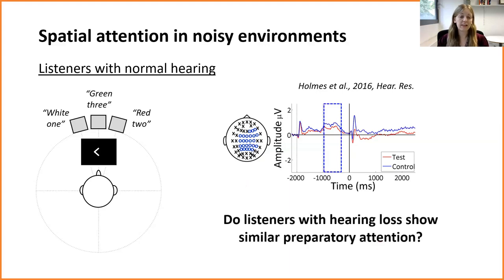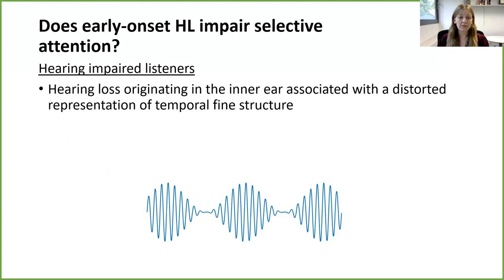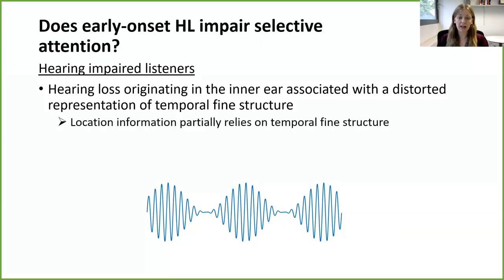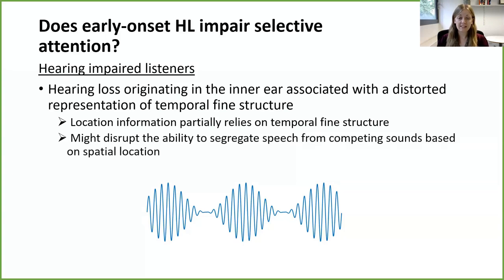We wanted to know whether listeners with hearing loss show similar preparatory attention as listeners with normal hearing, as indexed by this preparatory EEG activity. There's evidence that hearing loss originating in the inner ear distorts the representation of the temporal fine structure of sounds — these rapid fluctuations you can see in the tone on this slide. This represents a loss of sensory precision. Information about spatial location at least partially relies on information contained in the temporal fine structure of sounds, and listeners with normal hearing use these cues to segregate speech from competing sounds. So if someone has impaired hearing, they might not have access to these cues and may not be able to focus their attention on a precise spatial location.